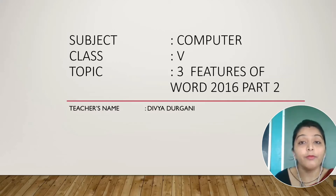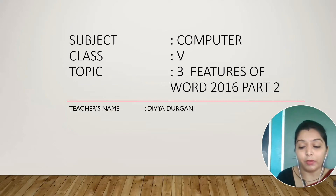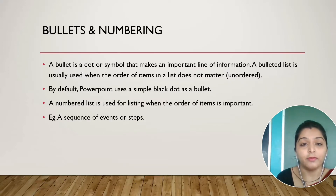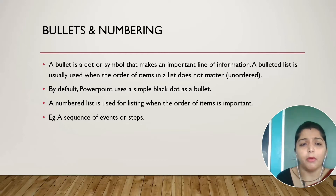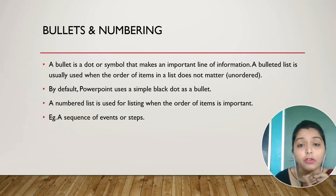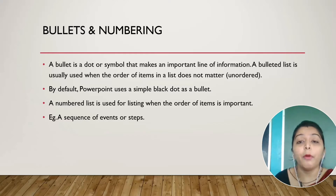Today, we are moving forward with part 2. Let's see what we have today — bullets and numbering. A bullet is a dot or symbol that marks an important line of information.